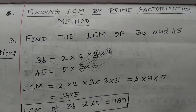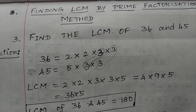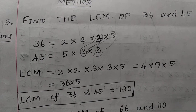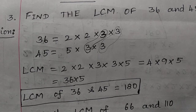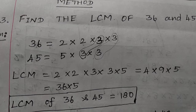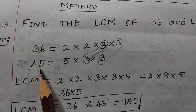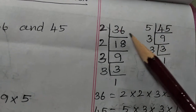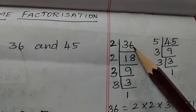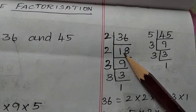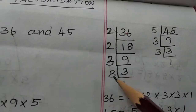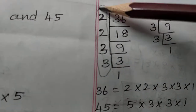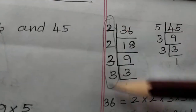Finding LCM by prime factorization method. This is an extension of the factorization method. The difference is that we express 36 and 45 in terms of prime factors only. Divide 36 by prime numbers: 36 ÷ 2 = 18, 18 ÷ 2 = 9, 9 ÷ 3 = 3, 3 ÷ 3 = 1. So 36 = 2 × 2 × 3 × 3. Divide 45 by prime numbers until you get 1.